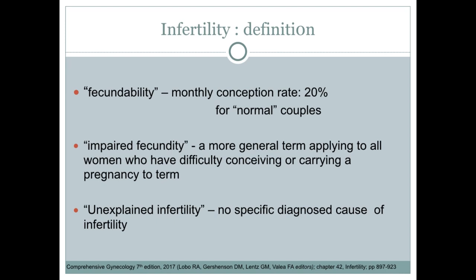Impaired fecundity is a more general term applying to all women who have difficulty conceiving or carrying a pregnancy to term. Unexplained infertility is the type of infertility with no specific diagnosed cause — meaning that after all the workups are done, we find no specific cause for the infertility for the couple.